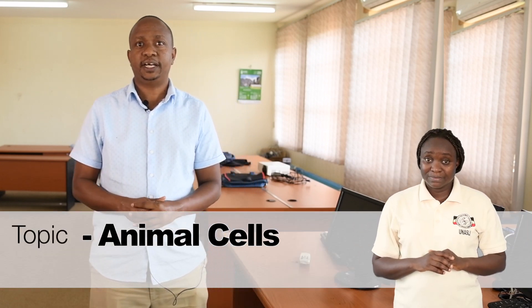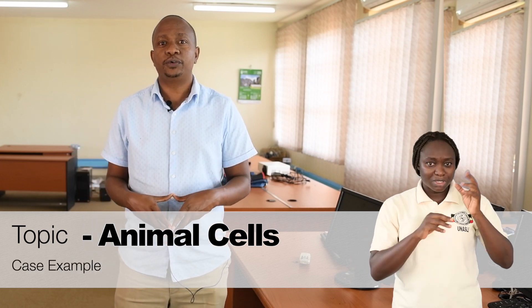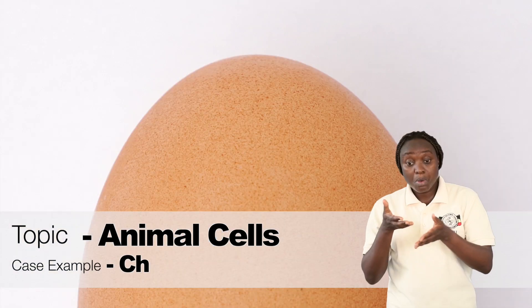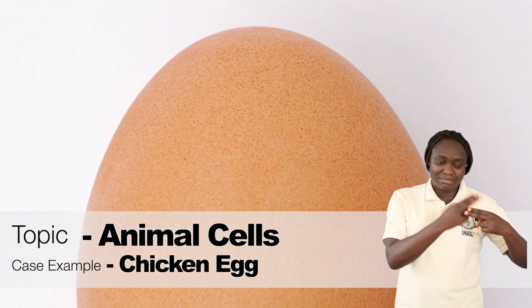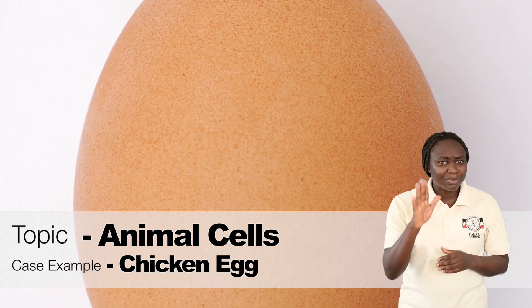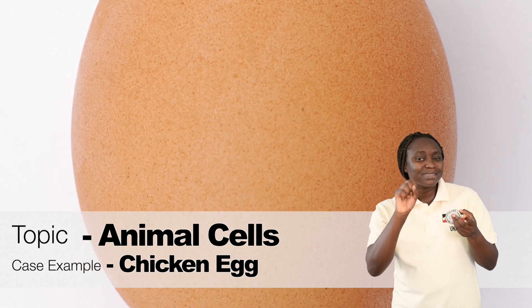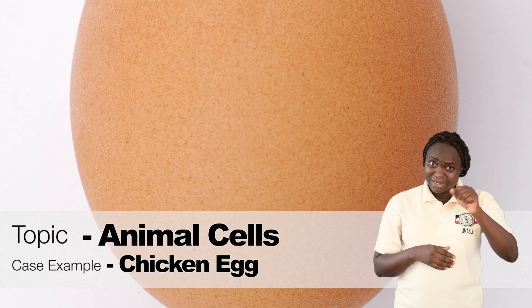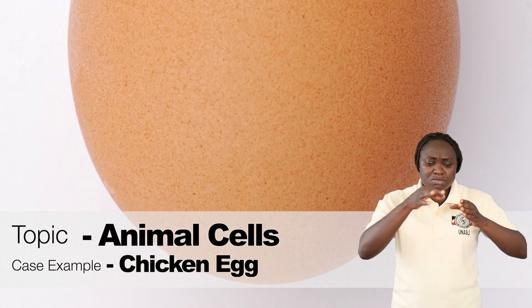Our lesson today will be about animal cells. Because we don't have a microscope, we are going to use a chicken egg. Did you know that a chicken egg is actually an animal cell? Yes, it is. We'll use the egg to help us find out the different parts of an animal cell.